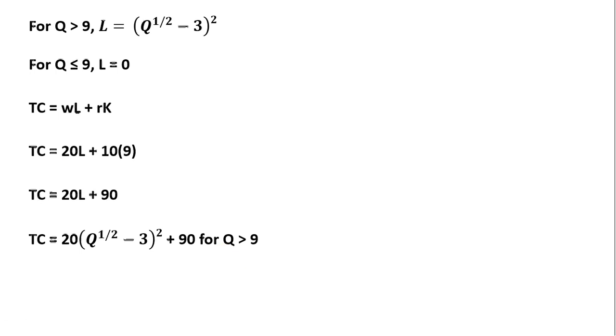For output levels less than or equal to 9, L will equal 0. So 20 times L, L is going to be 0 in this case since we're dealing with output less than or equal to 9 units. And simplifying total cost, the short run total cost will just equal $90. I hope you found this video helpful.